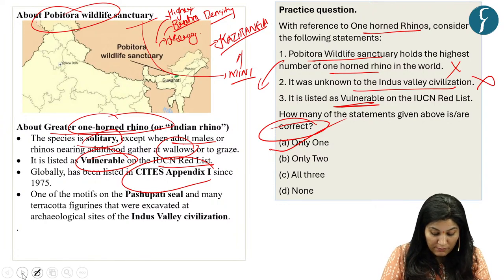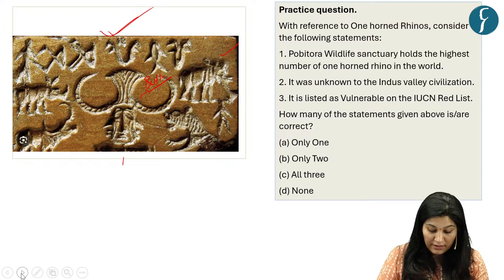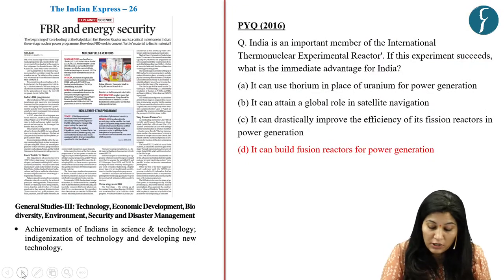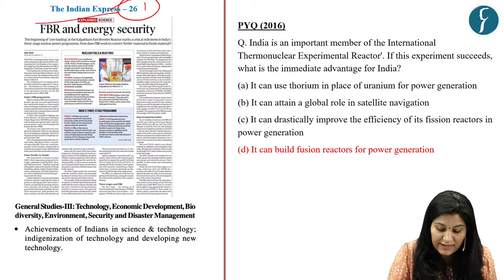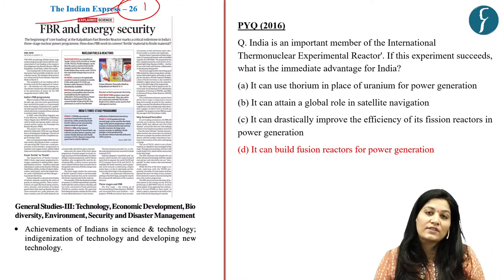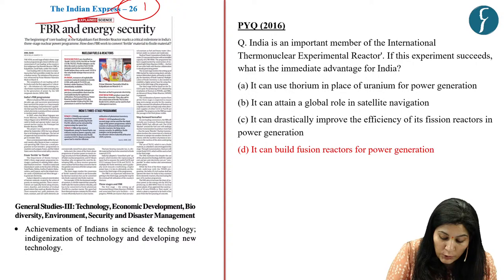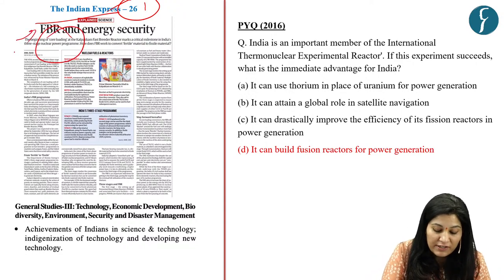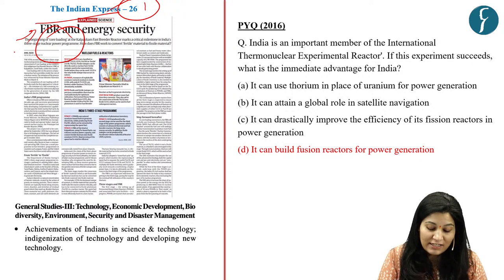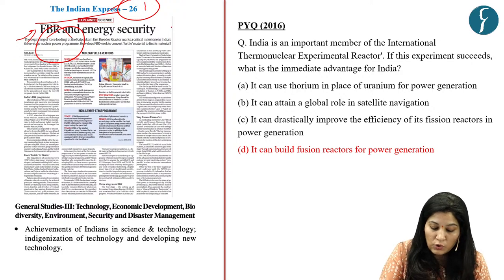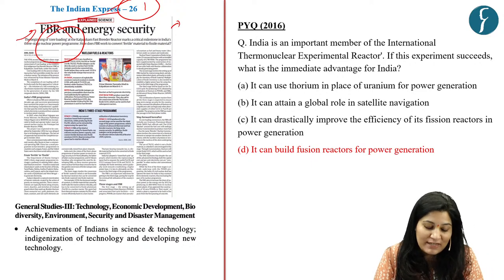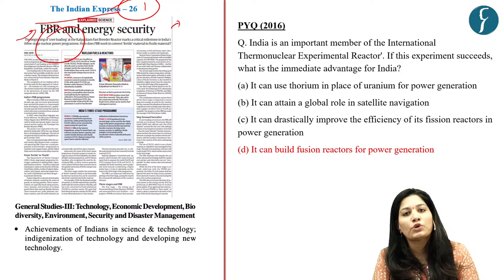The next question is based on a news article from page 26 in the Indian Express. The context is that coal loading at India's first indigenous fast breeder reactor was commenced at Kalpakkam, Tamil Nadu. Coal loading is the process of placing a nuclear fuel assembly inside the core of a nuclear reactor.